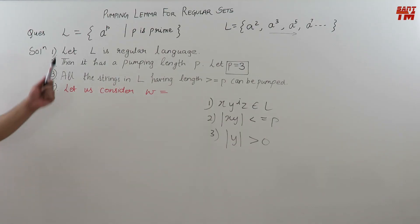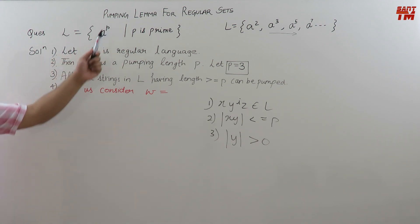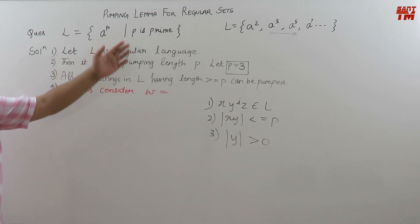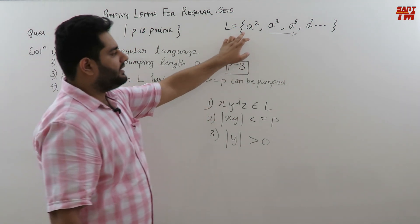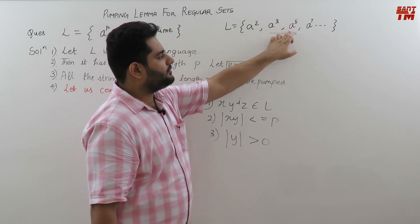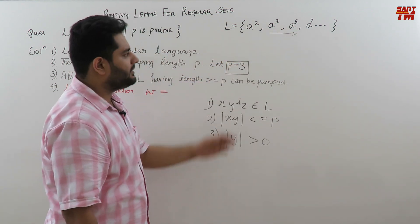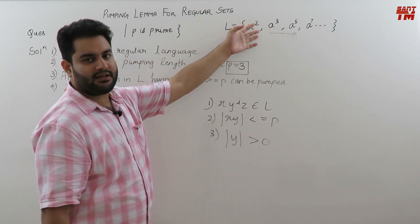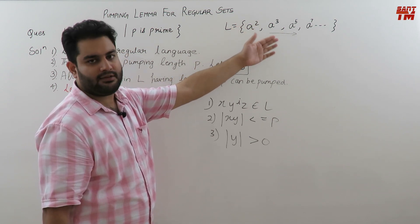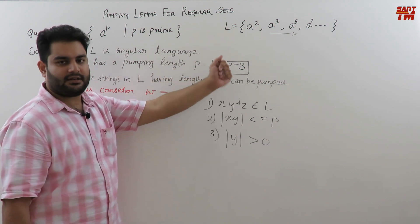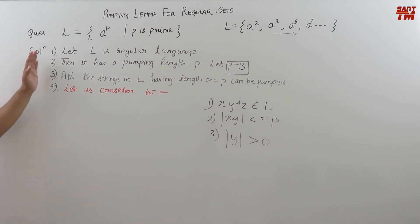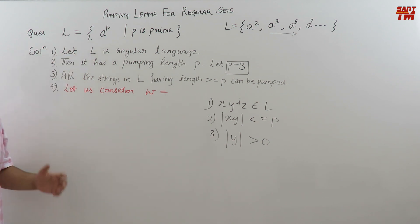Consider this example: the language is given as a raised to the power p, such that p is a prime number. This language will contain strings like a squared, a cubed, a raised to the power 5, a raised to the power 7, because the power must be a prime number — 2, 3, 5, 7, 11, and so on. We have to check using the Pumping Lemma that this language is not regular.